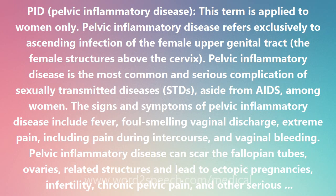The Gonococcus Neisseria gonorrhea, which causes gonorrhea, probably travels up into the fallopian tubes, where it causes sloughing — the casting off of some cells — and invades others, multiplying within and beneath these cells. The infection then spreads to other organs, resulting in more inflammation and scarring.